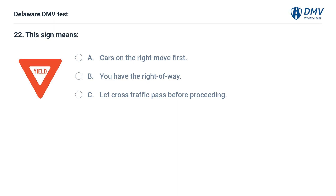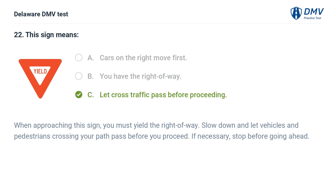This sign means: A. Cars on the right move first. B. You have the right of way. C. Let cross traffic pass before proceeding. Answer: C. When approaching this sign, you must yield the right of way. Slow down and let vehicles and pedestrians crossing your path pass before you proceed. If necessary, stop before going ahead.